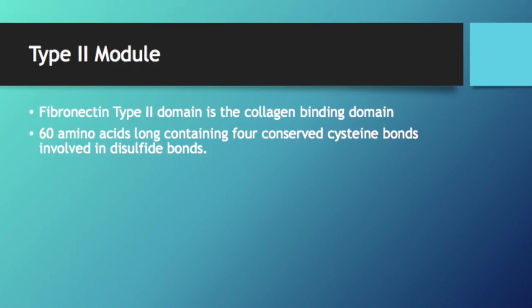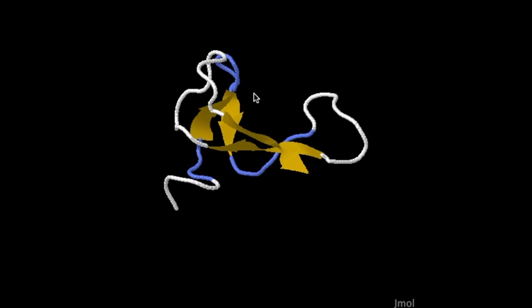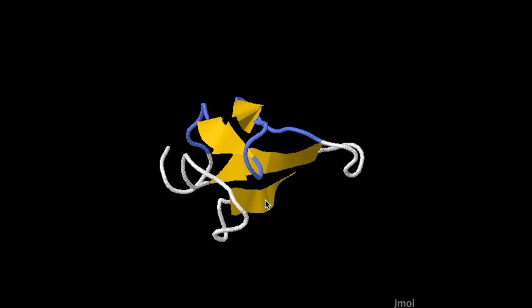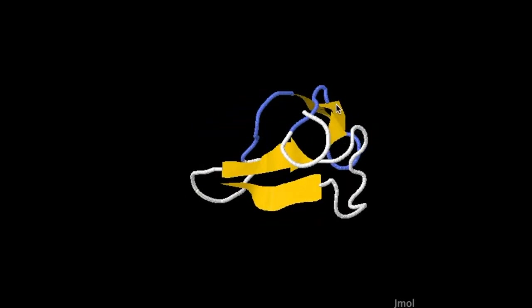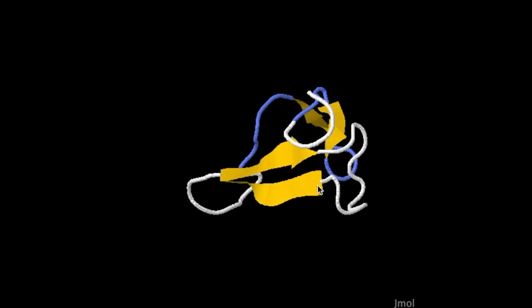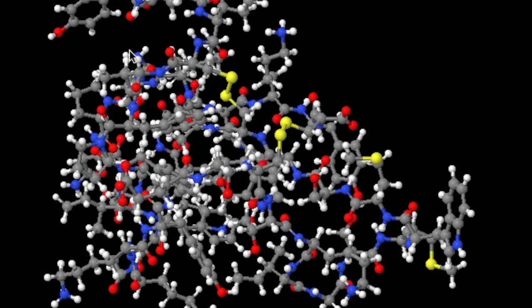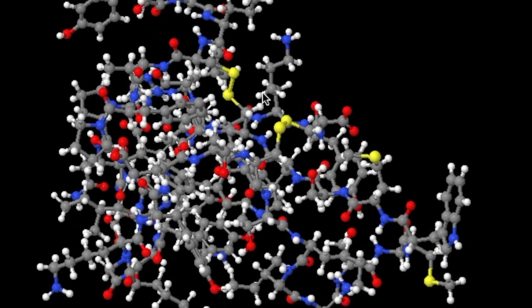The type 2 domain of Fibronectin is approximately 60 amino acids long and is composed of two anti-parallel beta strands. This domain is also where the collagen binding domain is located. A cavity in the side of the module made up of aromatic and hydrophobic residues in conjunction with a charged serine is thought to be the binding site for leucine sequences of collagen.